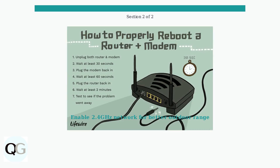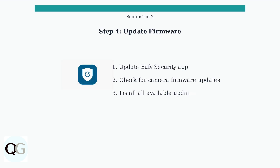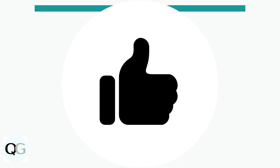Make sure your 2.4 GHz network is enabled, as it provides better range for outdoor devices. Update both the eufy security app and your camera's firmware to the latest versions, as this resolves many connectivity issues and improves stability. If problems persist, perform a factory reset by holding the reset button for 10 to 15 seconds, then reconfigure your device through the eufy security app.